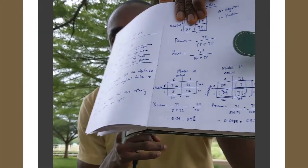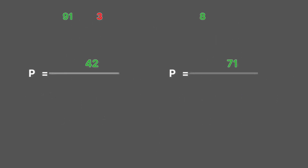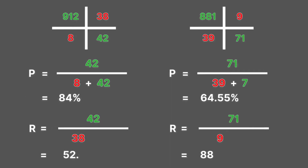Let's run some numbers. These figures are hypothetical but represent what you'd see in a normal confusion matrix. When you calculate the precision and recall from those formulas, you discover that Model A has higher precision and lower recall, while Model B has lower precision and higher recall.